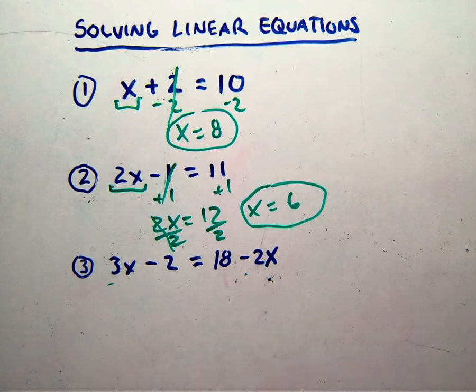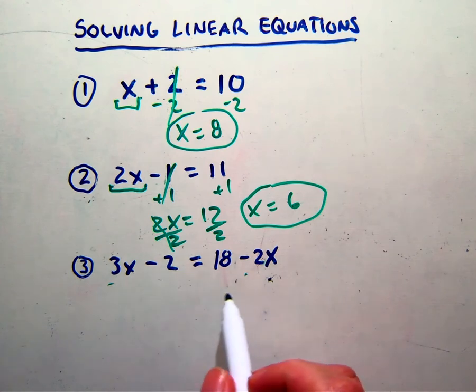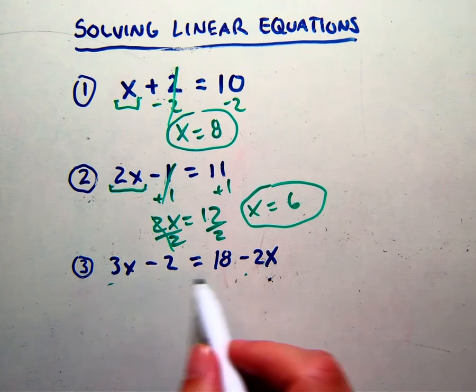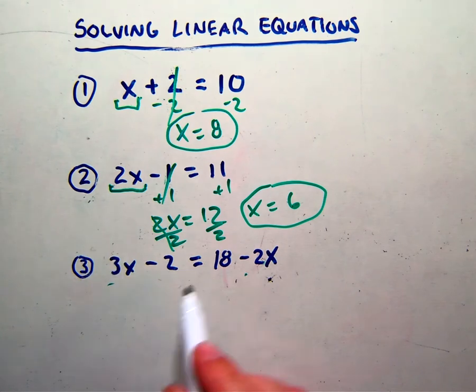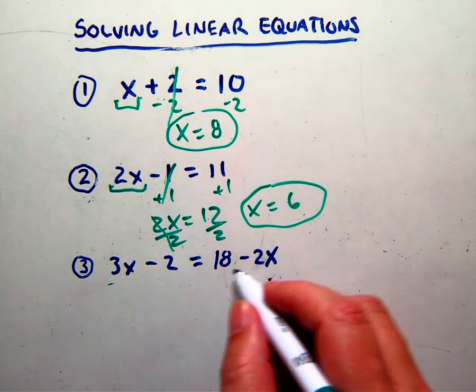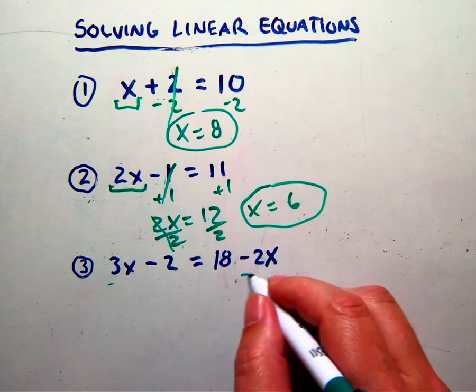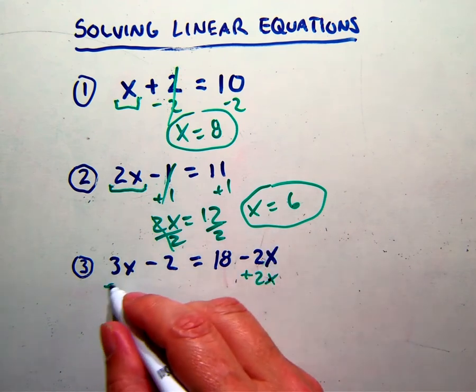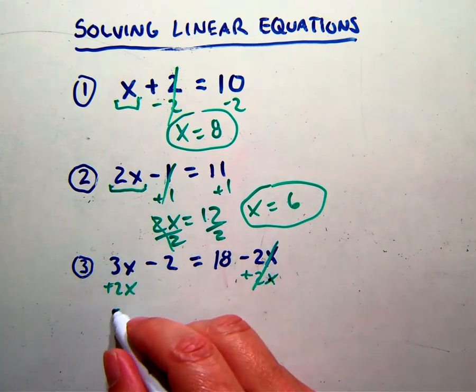Okay, so now this one is a multi-step equation. The reason it's multi-step is because we have x's on both sides of the equation. So what I like to do is get the x term on one side of the equation first. I want my x term to be positive. There's a negative 2x on this side. I'll do the opposite to get it to go away on this side and add it to this side. So now those are gone, and we have 5x over here.